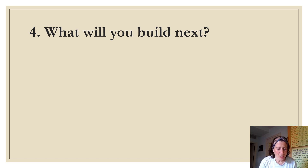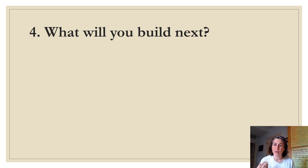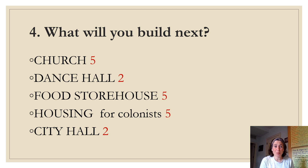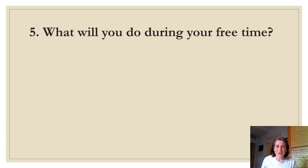Decision four reveal — what are you going to build next? The colonists built a church and a food storehouse, and they also built some housing within the walls of the fort — little houses inside the huge triangular fort. Religion was super important to them, so the church was their top priority. It was also important to build housing and a storehouse for food because winter was going to be a big deal. Points: church 5, dance hall 2, food storehouse 5, housing 5, city hall 2.